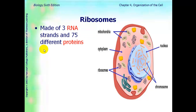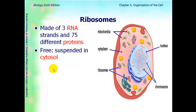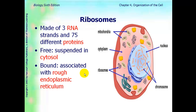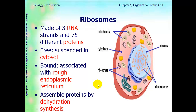Ribosomes are made of three RNA strands and 75 different proteins. There are two types of ribosomes found in two different areas: they can be suspended or loose in the cytosol, or they can be bound to the rough ER. Ribosomes make proteins by dehydration synthesis.